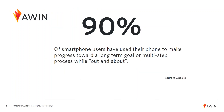According to Google, studies have shown that 90% of smartphone users have used their phone to make progress towards a long-term goal or multi-step process while out and about. So whether this is searching for information or choosing what item to buy, a huge number of searches begin on smartphones.